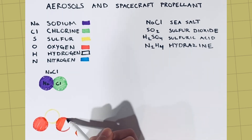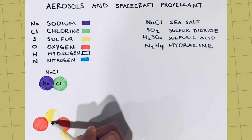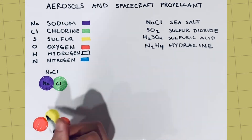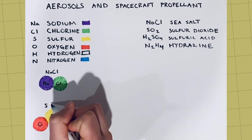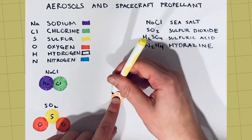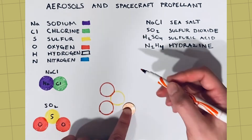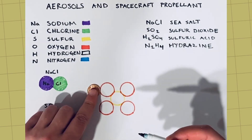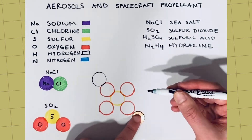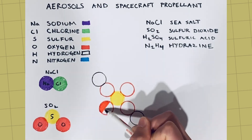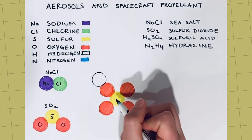Sulfur dioxide and sulfuric acid are released into the atmosphere after a volcanic eruption. Sulfur dioxide, SO2, has one sulfur atom and two oxygen atoms. Sulfuric acid, H2SO4, has one sulfur atom, four oxygen atoms, and two hydrogen atoms.